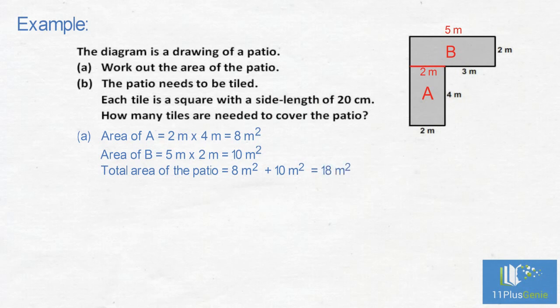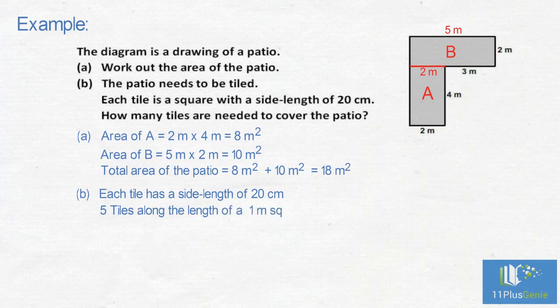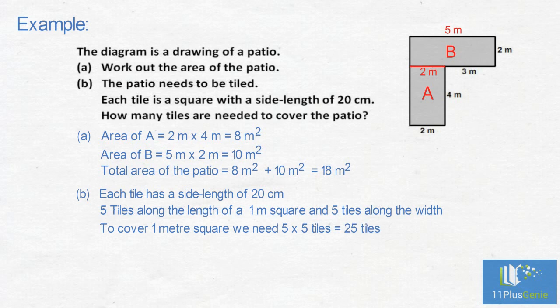Part B: Each tile has a side length of 20cm. We can fit five tiles along the length of 1m² and five tiles along the width. To cover 1m² we need 5 x 5 tiles which equals 25 tiles. In 18m² we can fit 18 x 25 tiles which equals 450 tiles.